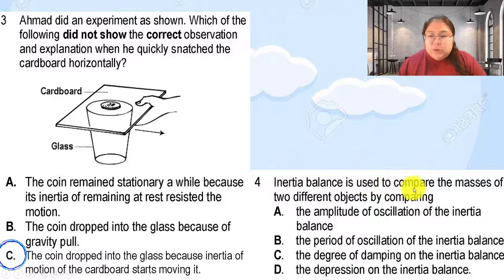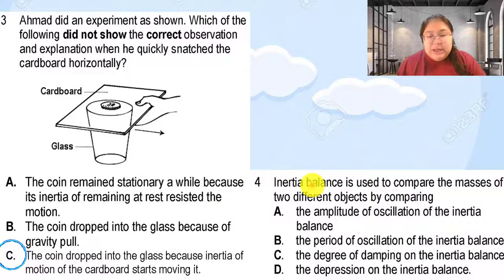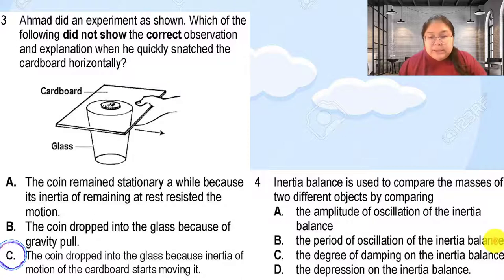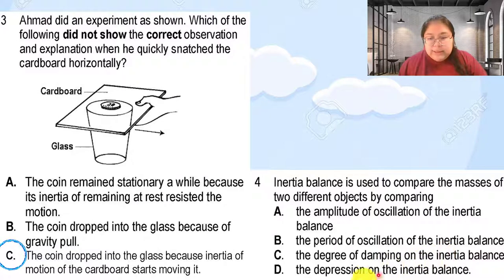Question four: an inertia balance is used to compare the mass of two different objects. What is used to represent the inertia? Option A: amplitude of oscillation — not related to inertia. Option B: period of oscillation — as mass increases, the oscillation period becomes longer, so the period of oscillation represents inertia. Options C and D about damping and depression are not correct. The answer is B.